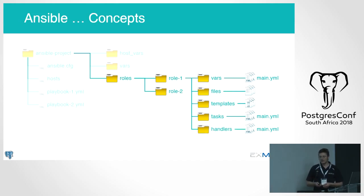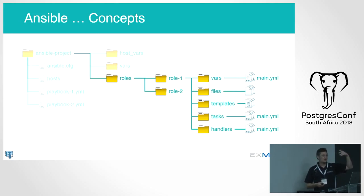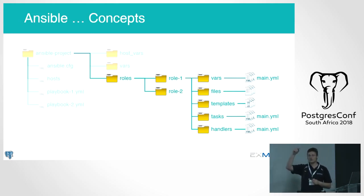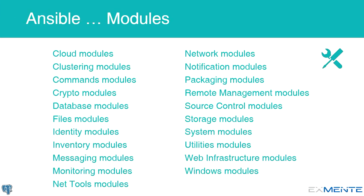Tasks are the actual things that run — where you create directories, create users, create databases, all of those things. Handlers are things that sometimes run — almost like an event handler dependent on which tasks run. For example, if you executed a task that requires the server to restart, you can activate the handler, and only if that task executed will the server restart. This slide gives you an idea of all the module types available: cloud, cluster, commands, crypto, database, files, and much more.